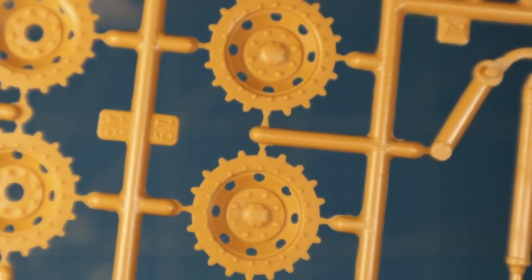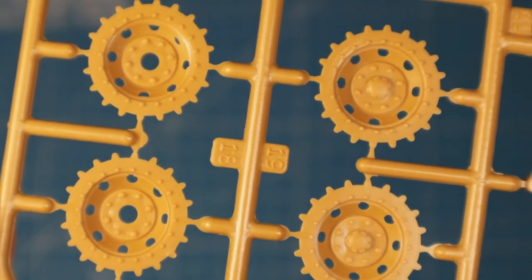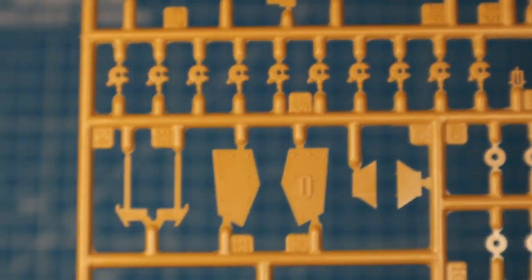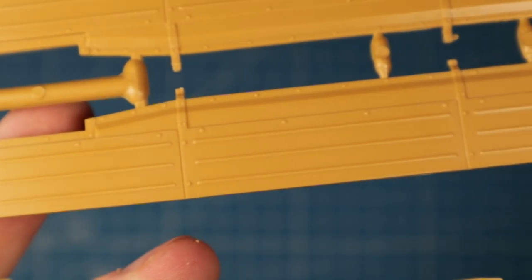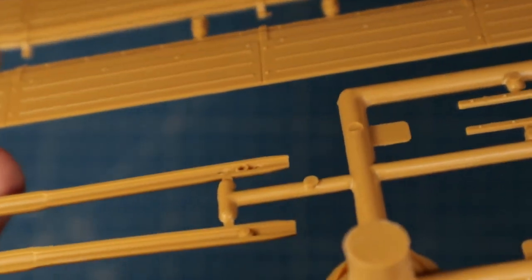There is no photo etch included, but the plastic parts look detailed enough to get a good result without any aftermarket parts. These are the side skirts. Because they are already quite thin, you probably don't need to replace them with photo etch parts to make them look realistic.